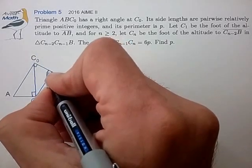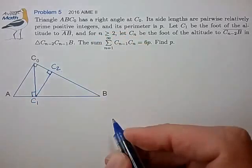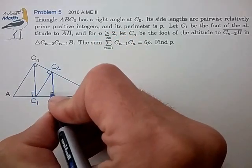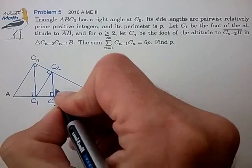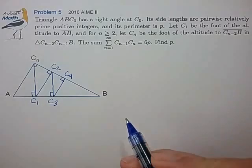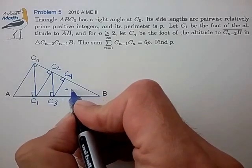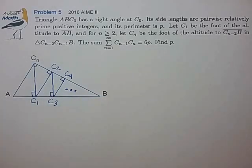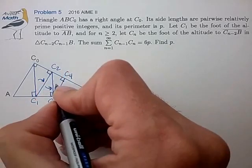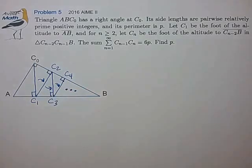So that defines C2 to be the foot of that altitude, and if we follow this one or two steps further, we see C3 is this point, C4 is this point, and this basically defines an infinite series of shrinking line segments, each of which shrinks by the same ratio as given by these similar triangles.